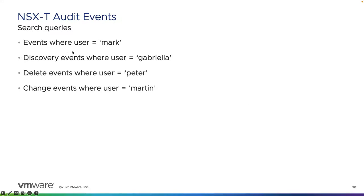You can look for events where the user equals Mark, or discovery events where the user equals Gabriel, delete events where the user equals Peter, or change events where the user equals Martin — as examples. So we can look for specific events that have occurred — whether changes, deletes, or adds — related to a specific user. This comes in very handy when you're doing audits.